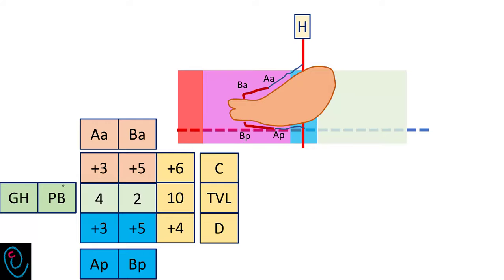Regarding the shape of the perineum, we measure the genital hiatus, which extends between the urethral orifice and the posterior hymenal margin — it measures 4 cm in our case scenario. The perineal body extends from the posterior hymenal margin to the anal orifice, and in this clinical scenario it measures 2 cm.